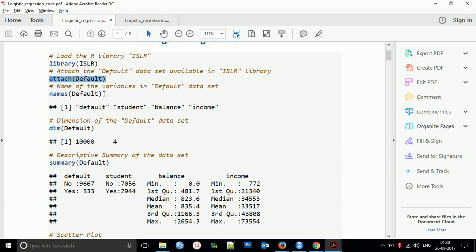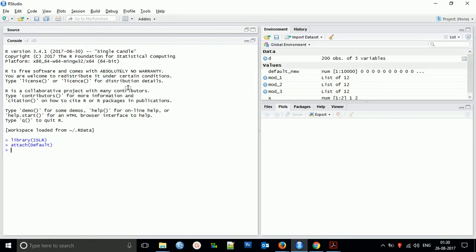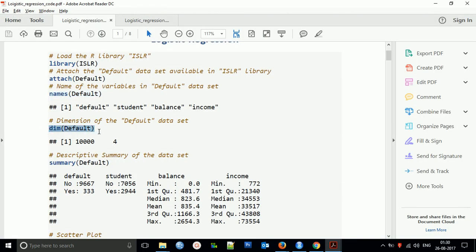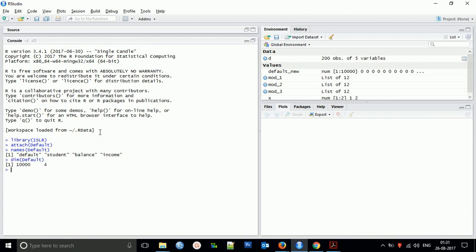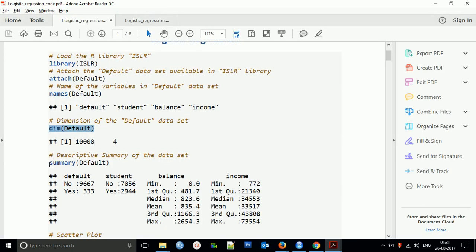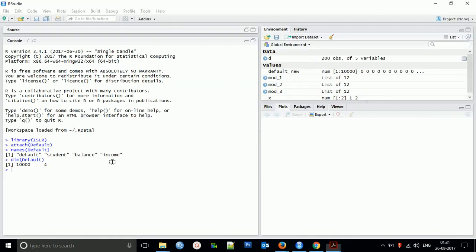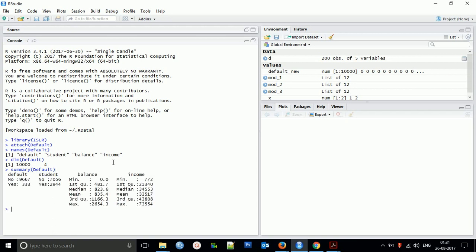I'll name the data and find the variable names. The variables are default, student, balance, and income. You can check the dimensions: there are 10,000 total rows and four variables. To find the descriptive summary, use summary of the default data.